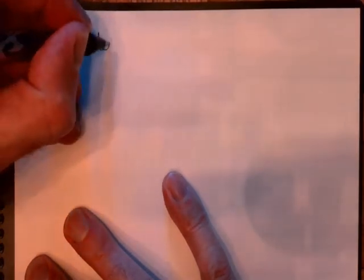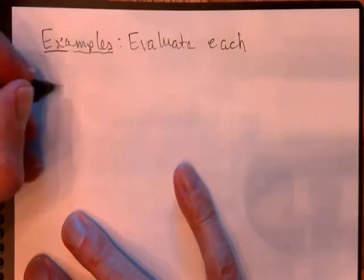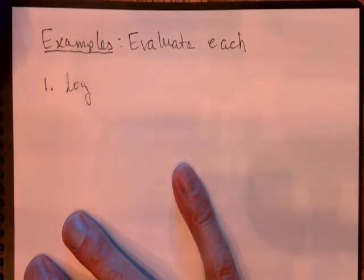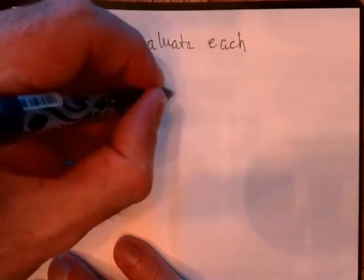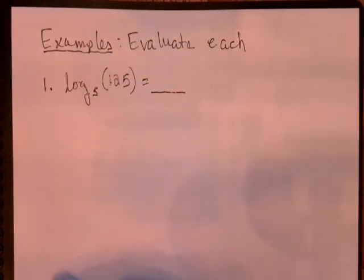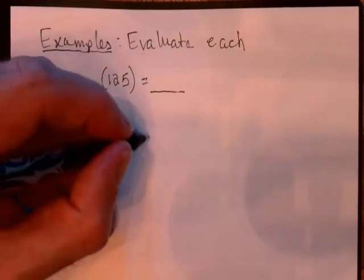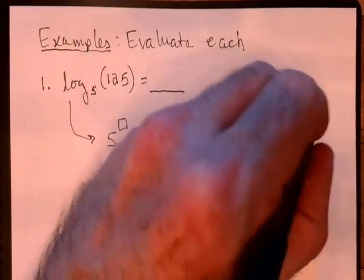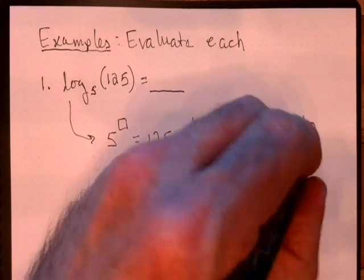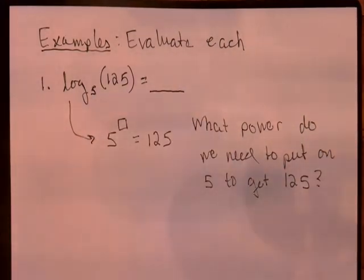So let's do something like this. Let's evaluate some simple logs. Evaluate each. So let's try this one. Log base 5 of 125. And I'll put a little blank here to indicate that's what we're trying to figure out. So we rephrase with an equivalent exponential equation. What do I need to put in the little blank there to make this statement true? So what power do we need to put on 5 to get 125?